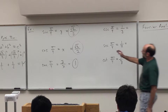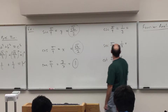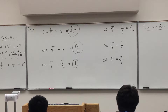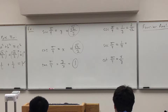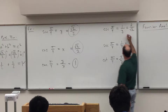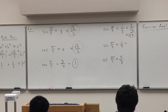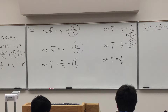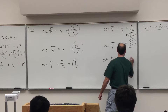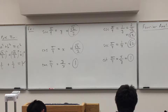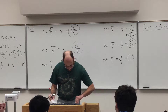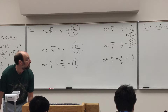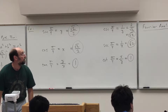Taking reciprocals: cosecant is the reciprocal of root 2 over 2, which is 2 over root 2 — rationalize the denominator to get 2 root 2 over 2, cancel the 2s: root 2. Secant of pi over 4 is also root 2. Cotangent is just 1. All of that is summarized in table 3, page 376, second row.